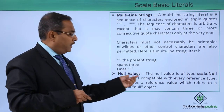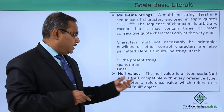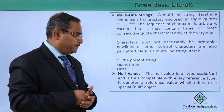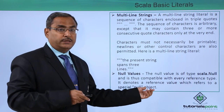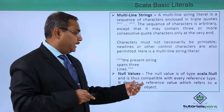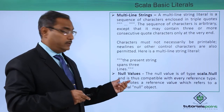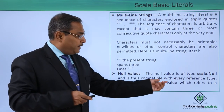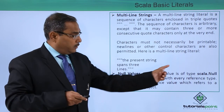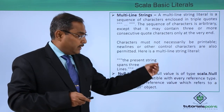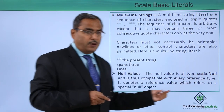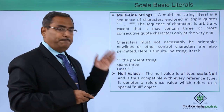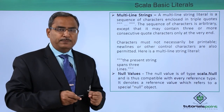The last literal type is the null value. The null value is of type scala.Null, which is compatible with every reference type. It denotes a reference value that refers to a special null object derived from the null class. Here we have defined all the different basic literals available in Scala.